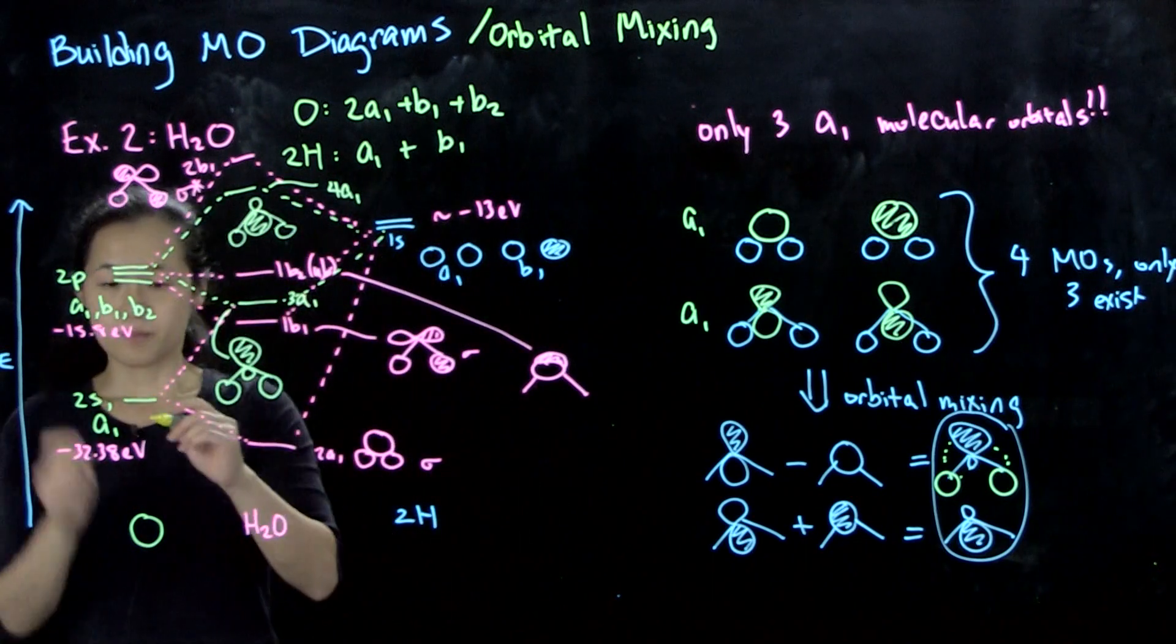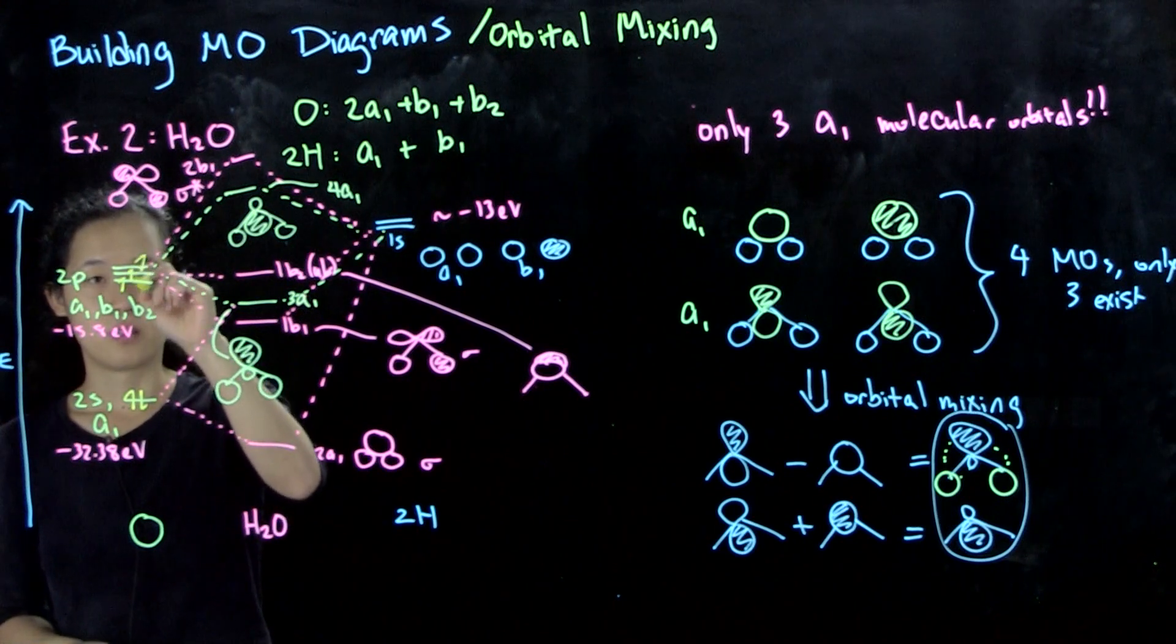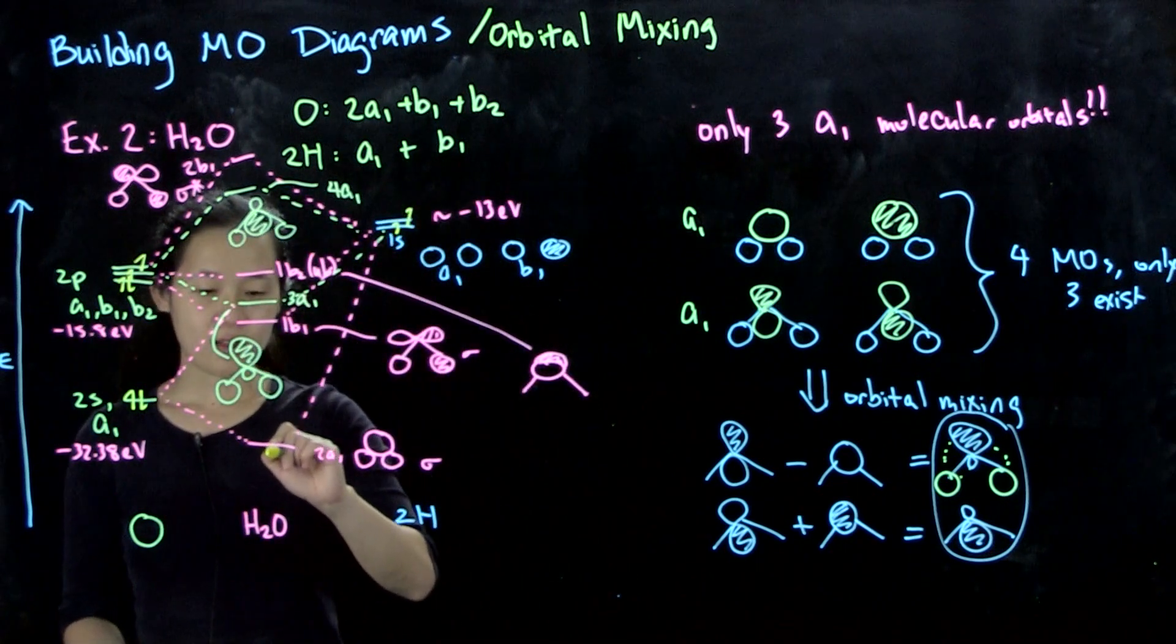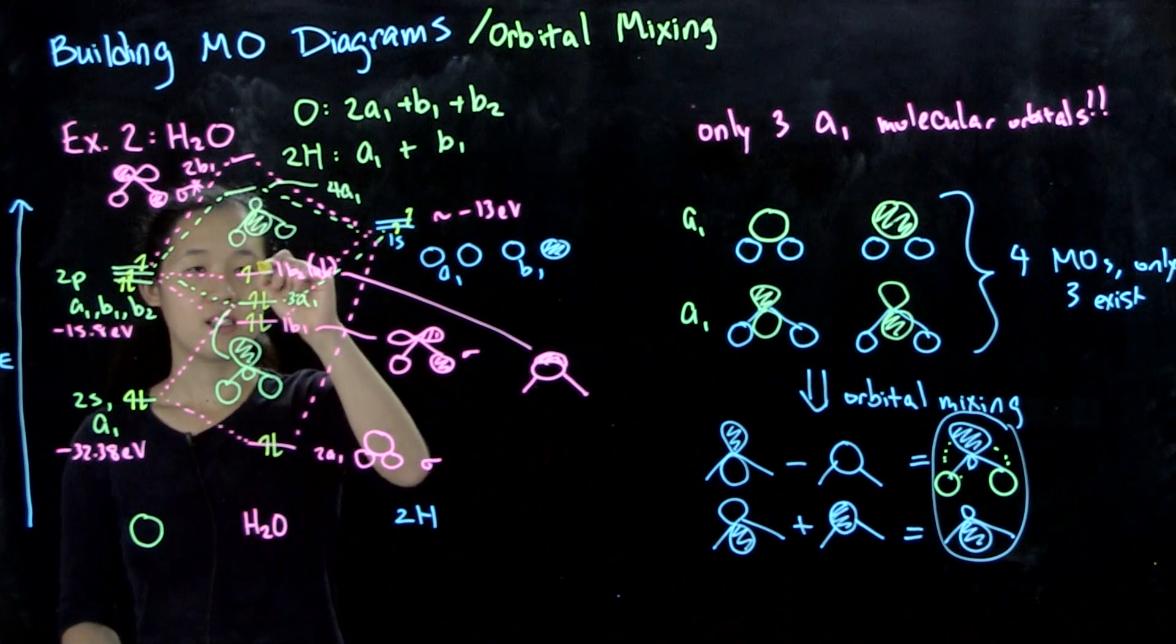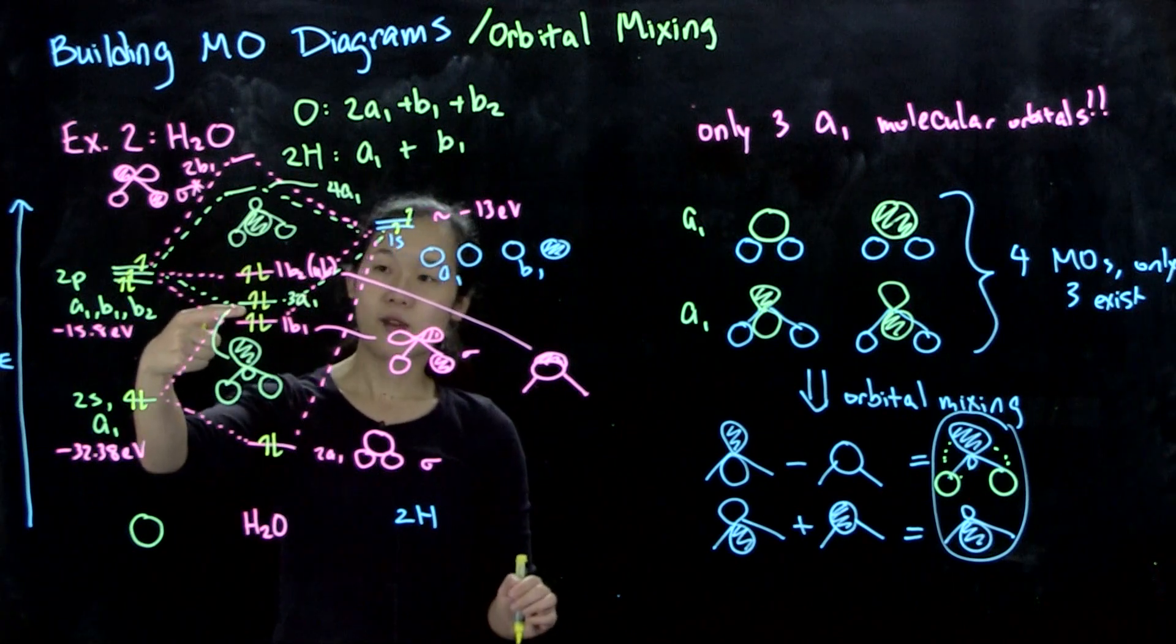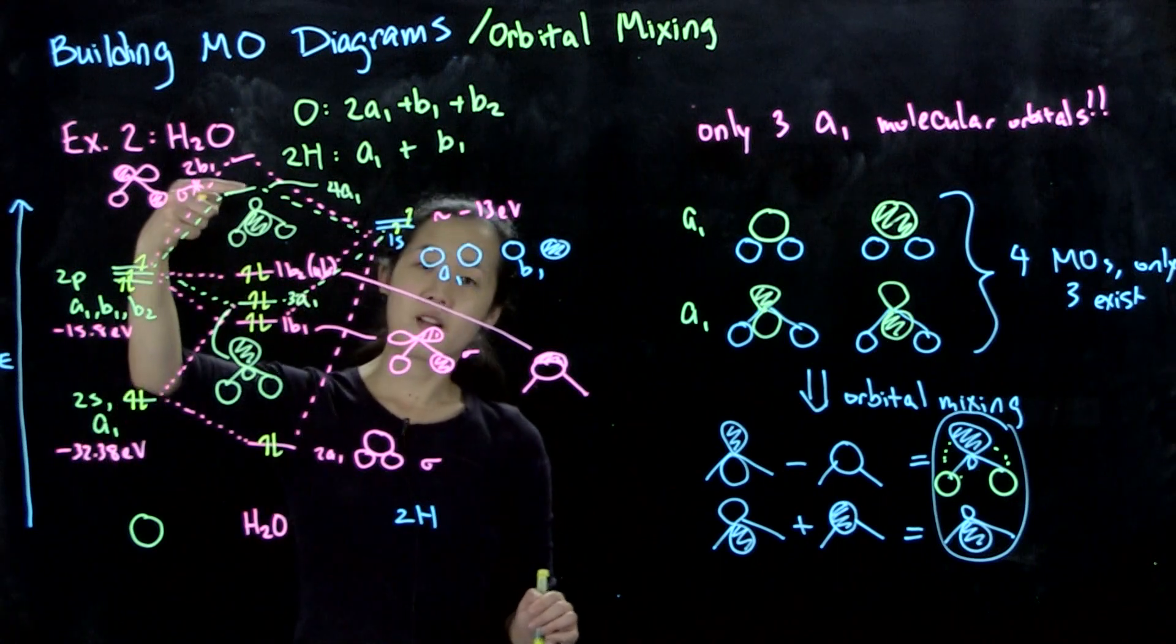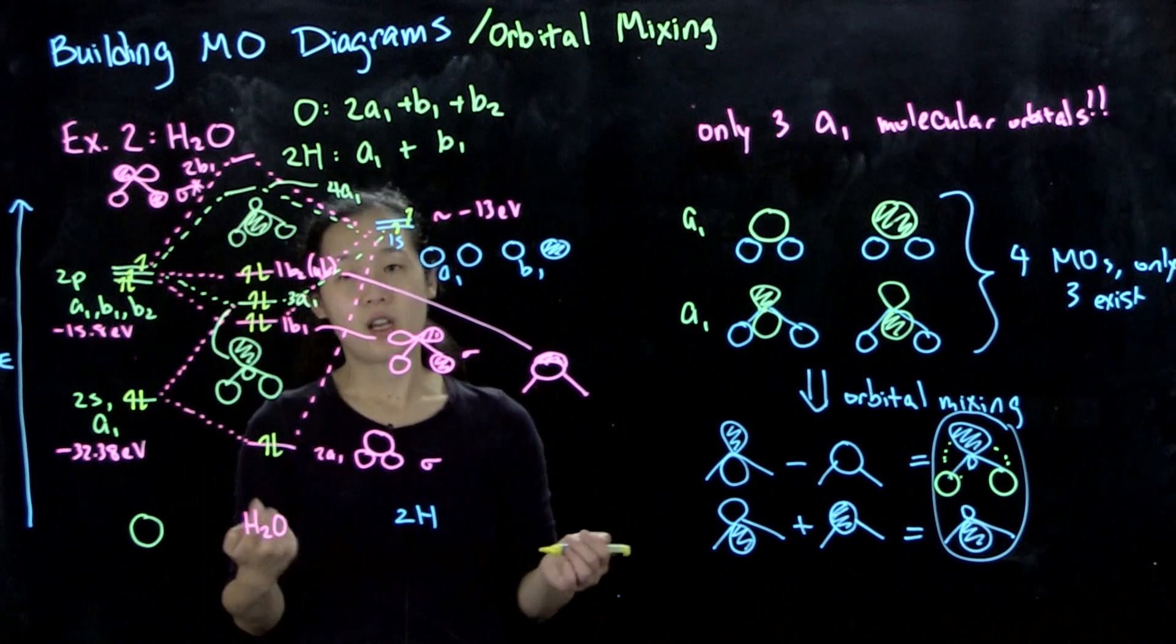Because of that, we end up with net stabilization because once we start filling in electrons - oxygen has 6 valence electrons, and our two hydrogens each have 1 electron, so we have overall 8 electrons. If we start filling in electrons: 1, 2, 3, 4, 5, 6, 7, 8. By stabilizing this 3a1 with orbital mixing, we end up with net stabilization. The cost of stabilizing 3a1 is that we destabilize 4a1, but that's okay because 4a1 is unoccupied.